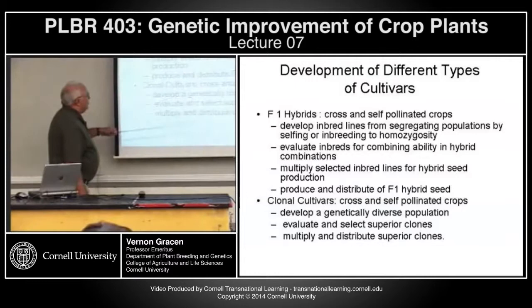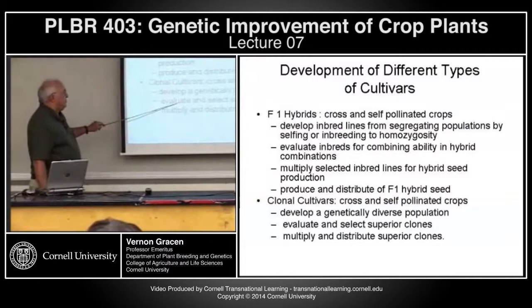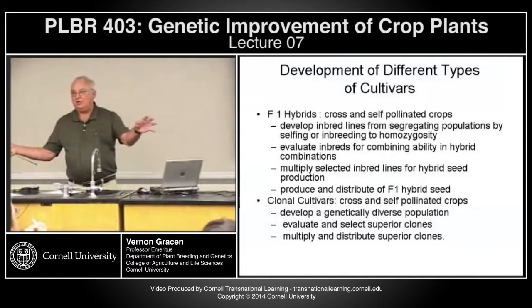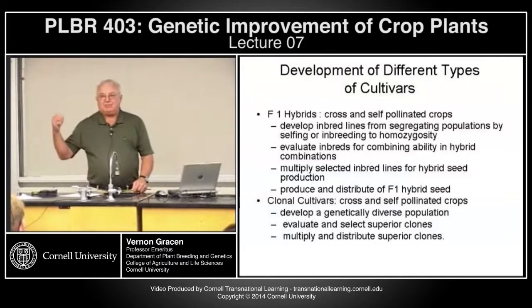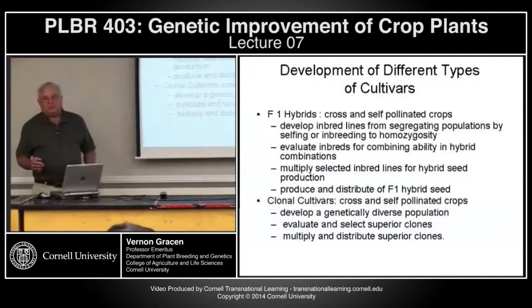For clonal cultivars, you develop a genetically diverse population, evaluate and select superior clones, and then don't worry about how those clones sexually reproduce because you're going to vegetatively propagate them. If you're lucky enough to deal with a vegetatively propagated or clonal crop, you get around a lot of the problems of inbreeding depression and restoring heterozygosity.